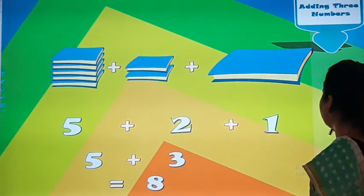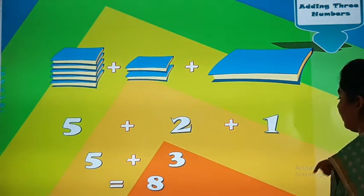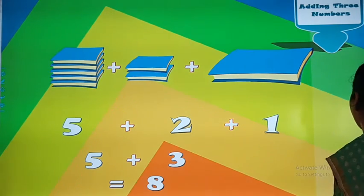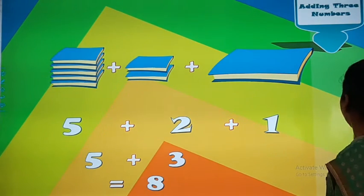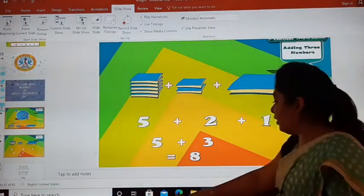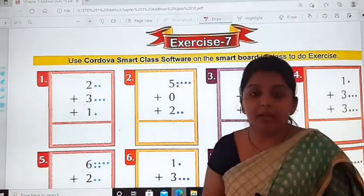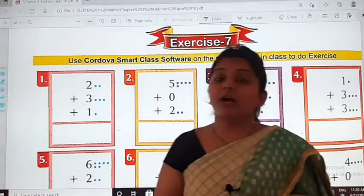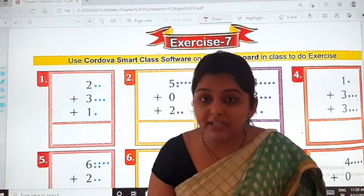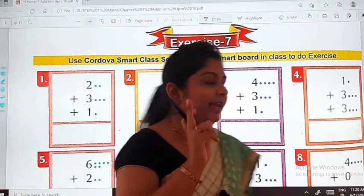Understood, dear children? Now let us move to the exercise in your textbook. There is a small exercise in your textbook as well. Let us see to it. Here is exercise number 7. Come on, open your textbook fast and do along with me. Let us start.